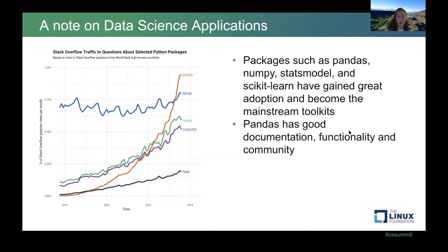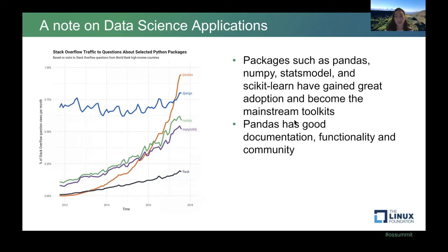That might present a problem for data science applications, as most of us like to write in Python. Most data science teams are familiar with lots of Python libraries, with pandas being the most familiar. This chart shows the percentage of Stack Overflow questions tagged to pandas being relatively higher than other Python packages. Pandas is a really great open source package with great documentation, good functionality, and a great community. The same is true for NumPy, statsmodels, and scikit-learn — these have become mainstream tools for data scientists.